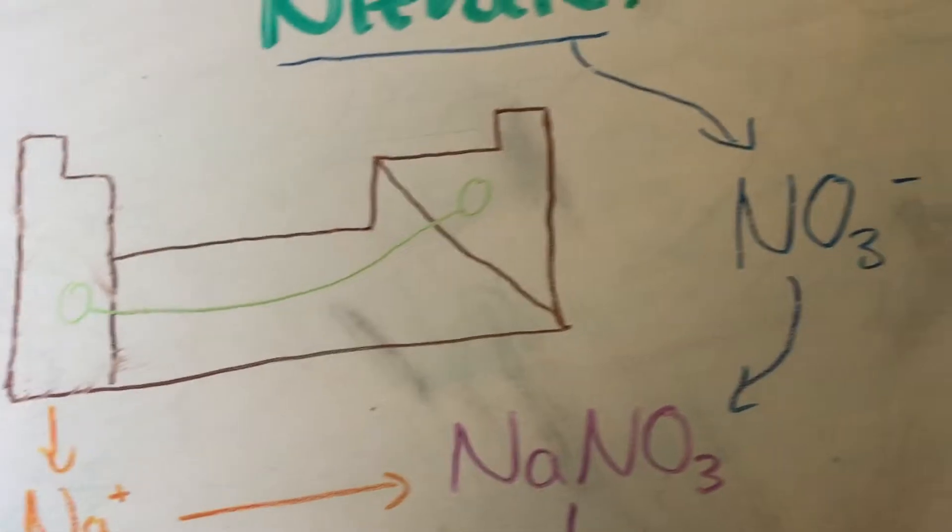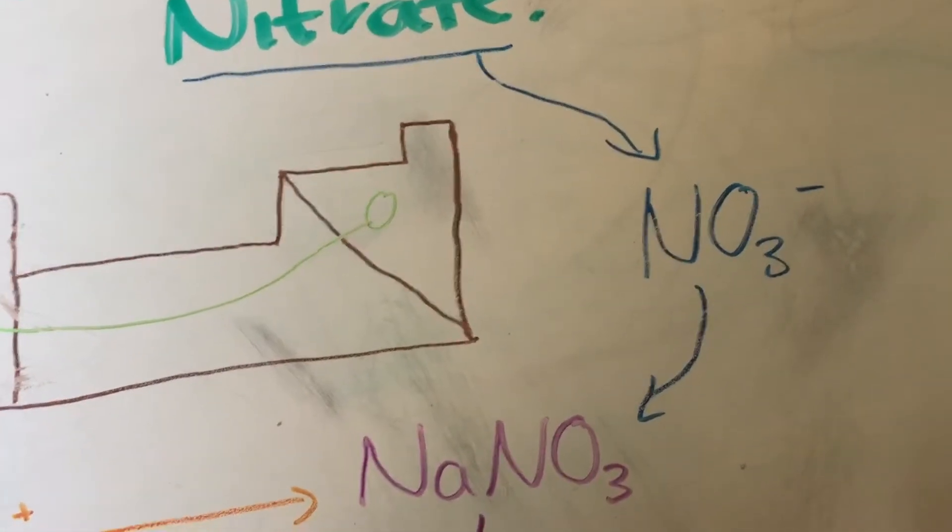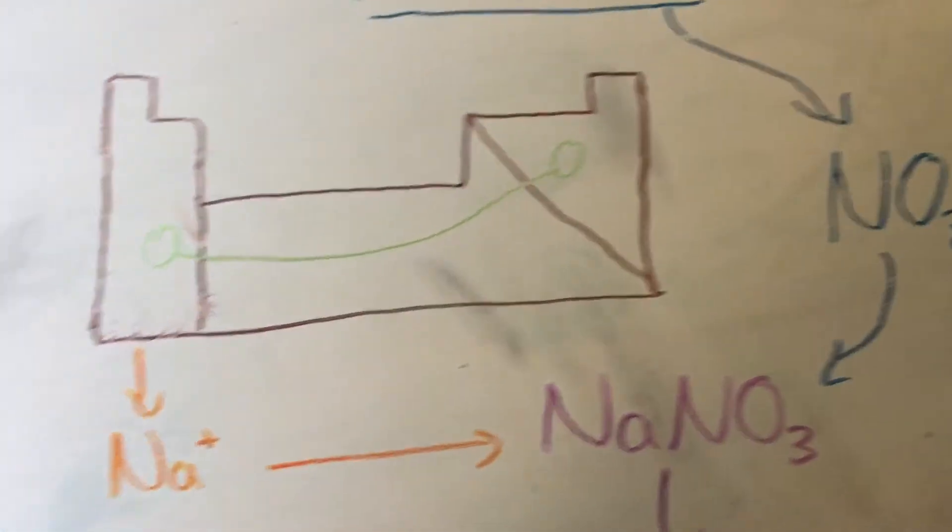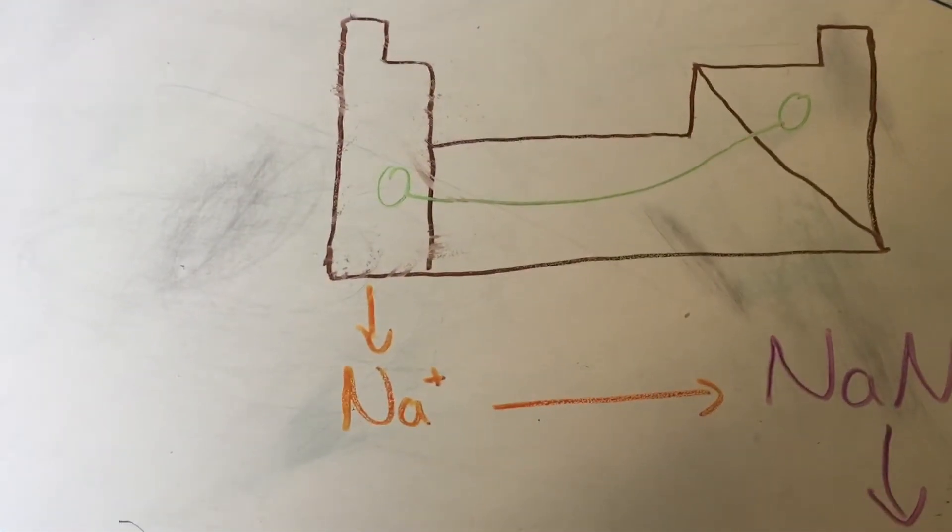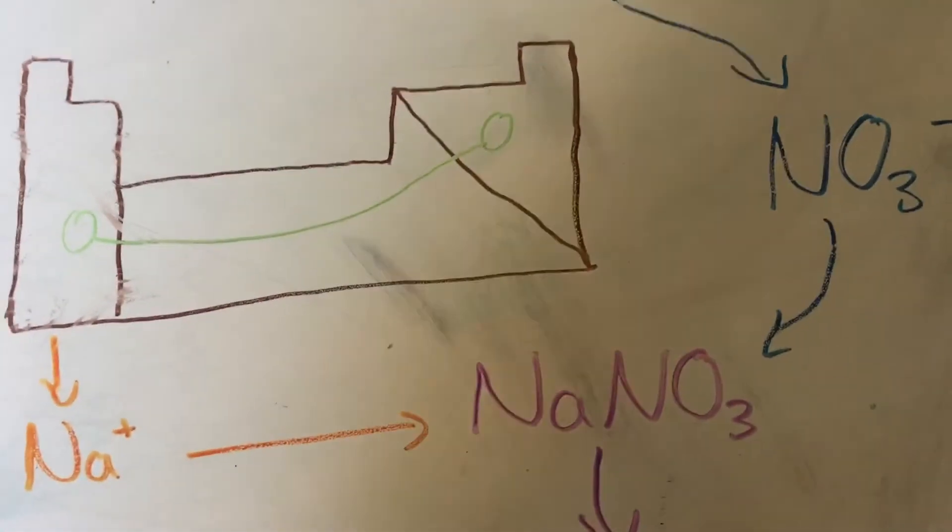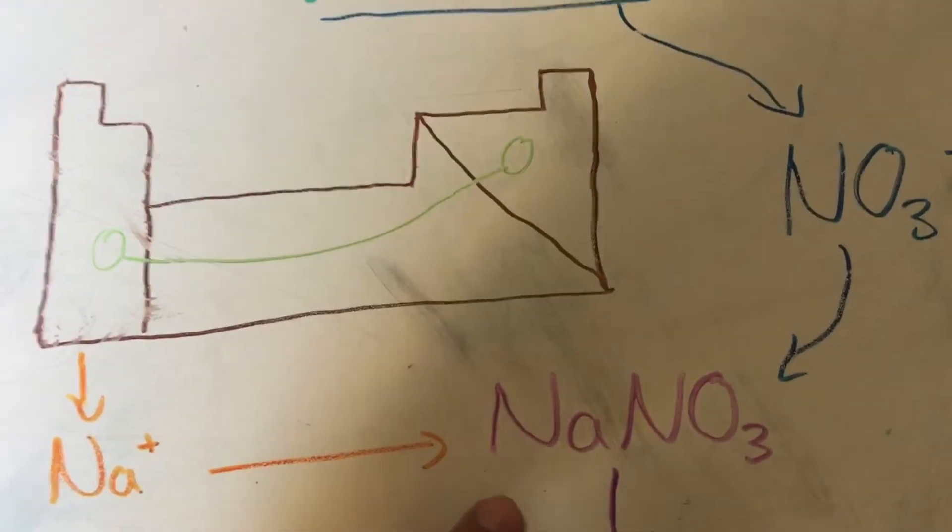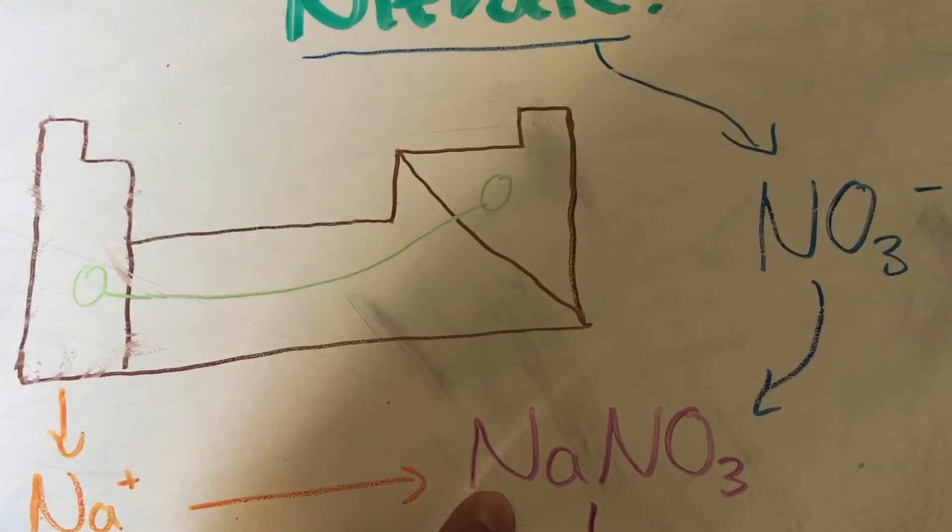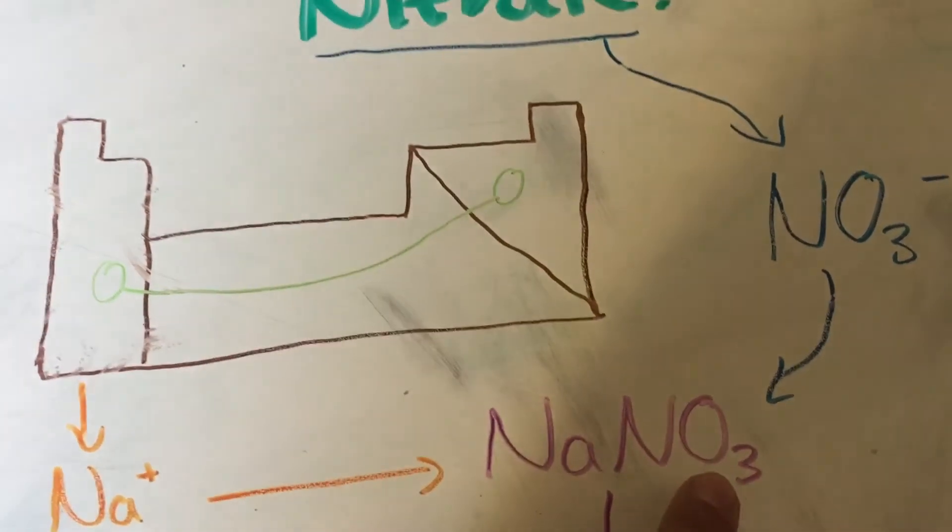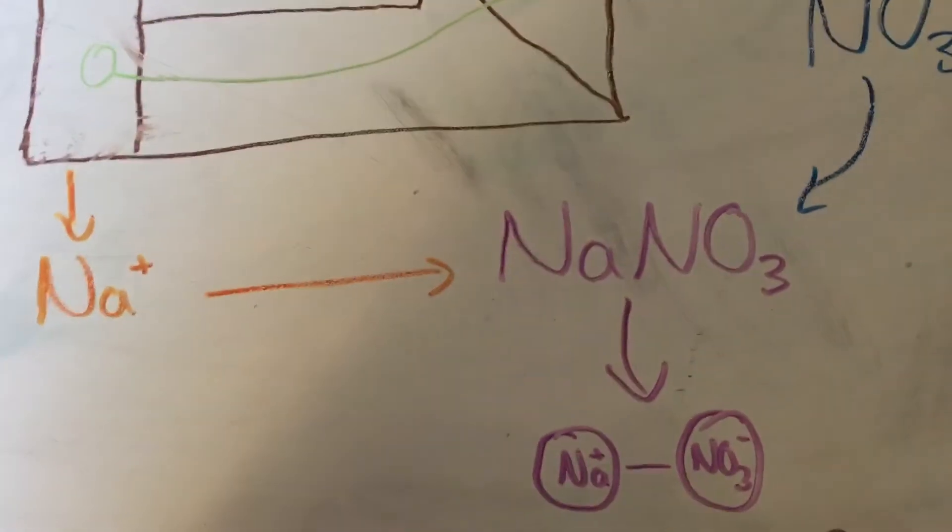Once we see this we identify that the nitrate has a negative charge and sodium has a positive charge. So the ratio is still going to be per each sodium ion that we have we're going to have one nitrate ion which we can represent over here.